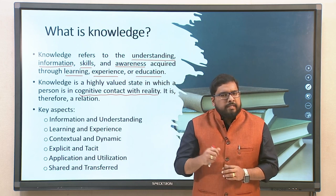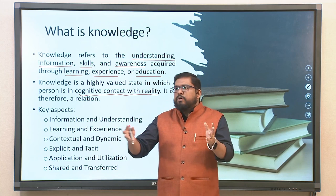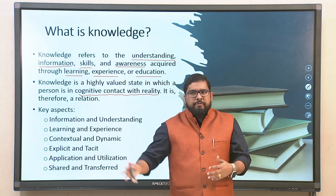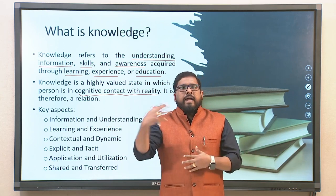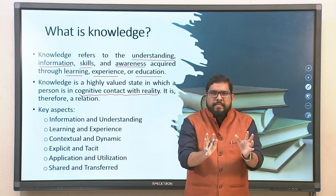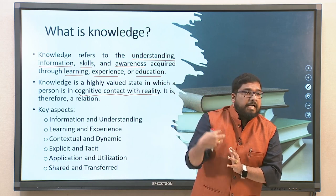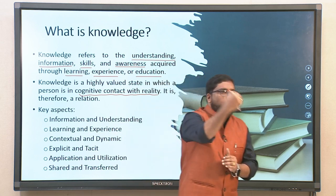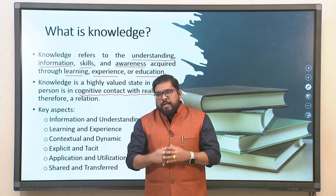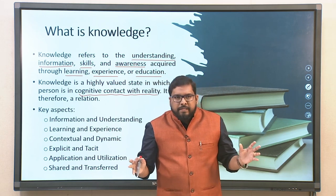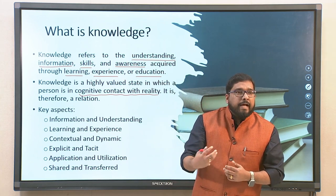There are certain key aspects of knowledge. One is information and understanding. Information could be a pin code like 7-8-1-0-3-9 — just random numbers. When they come together, every single digit at a particular place has a certain connotation, reference, and meaning. This understanding — that these digits represent the pin code of a particular place — is what converts basic information into knowledge. The useful information becomes knowledge.